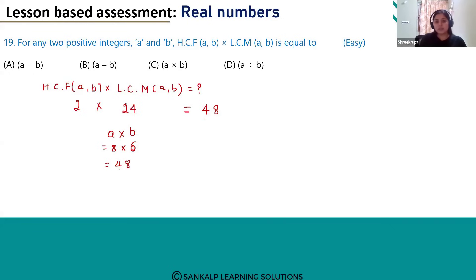We get the same value. So in general, we can write HCF of A and B multiplied by LCM of A and B will be equal to the product of A and B. So the correct answer will be option C, A multiplied by B.